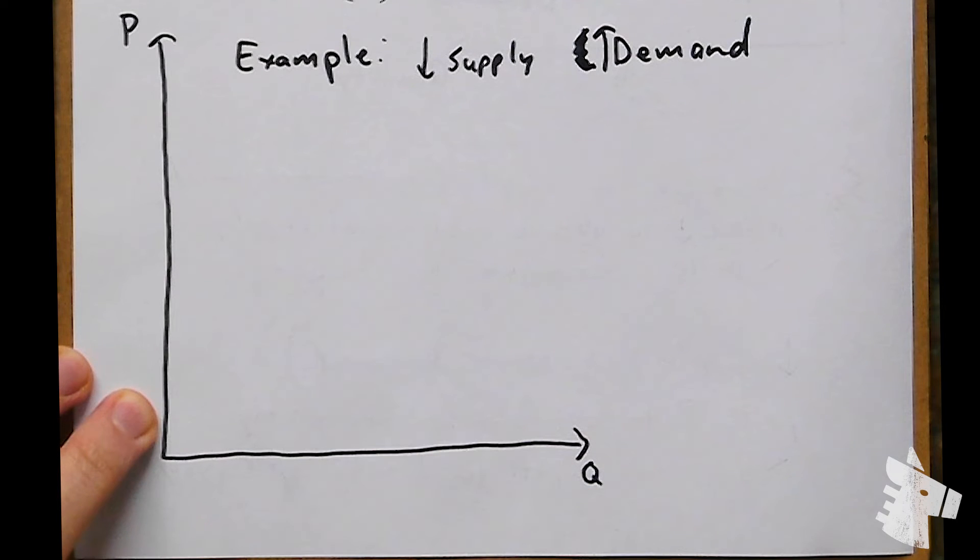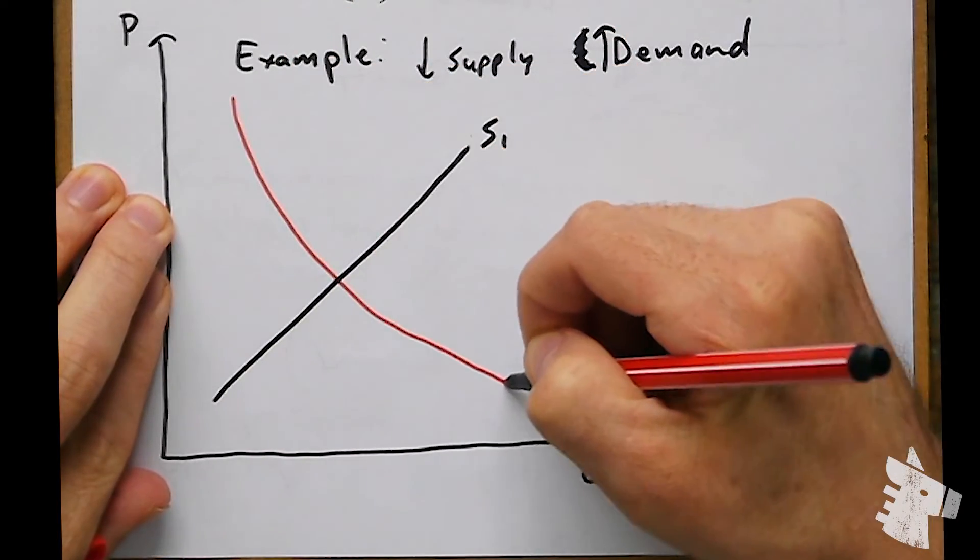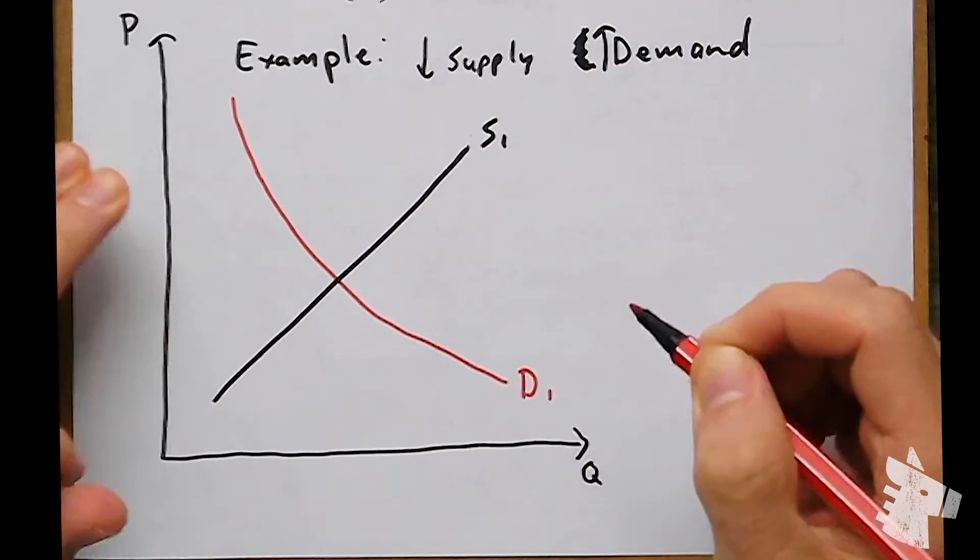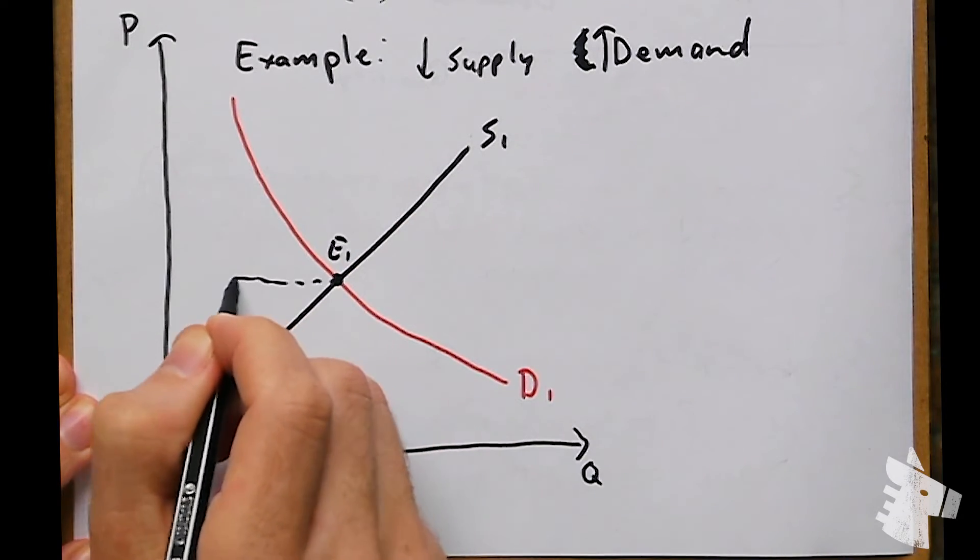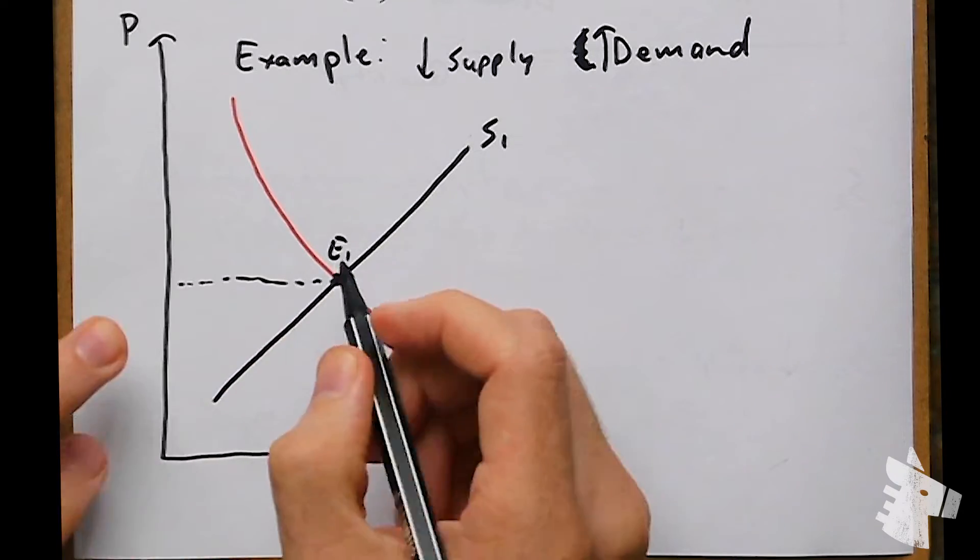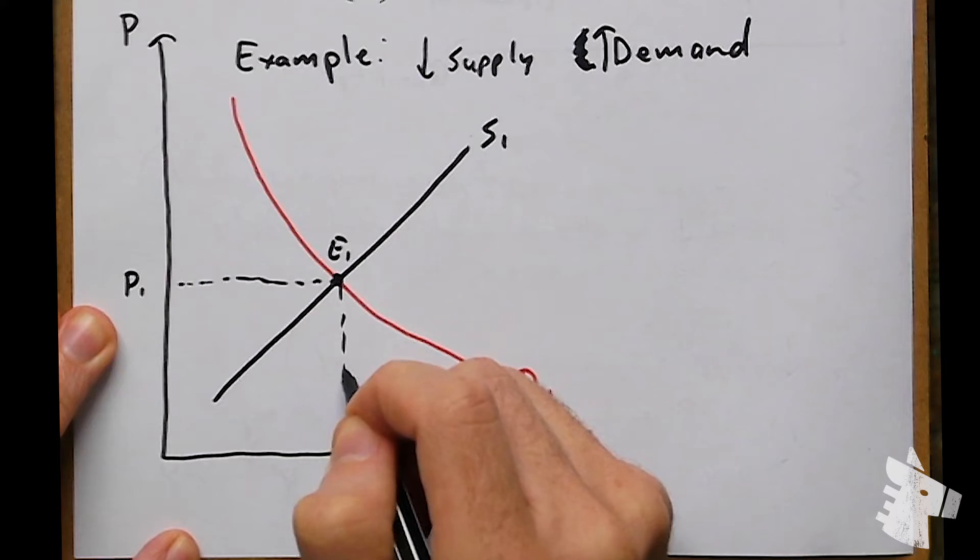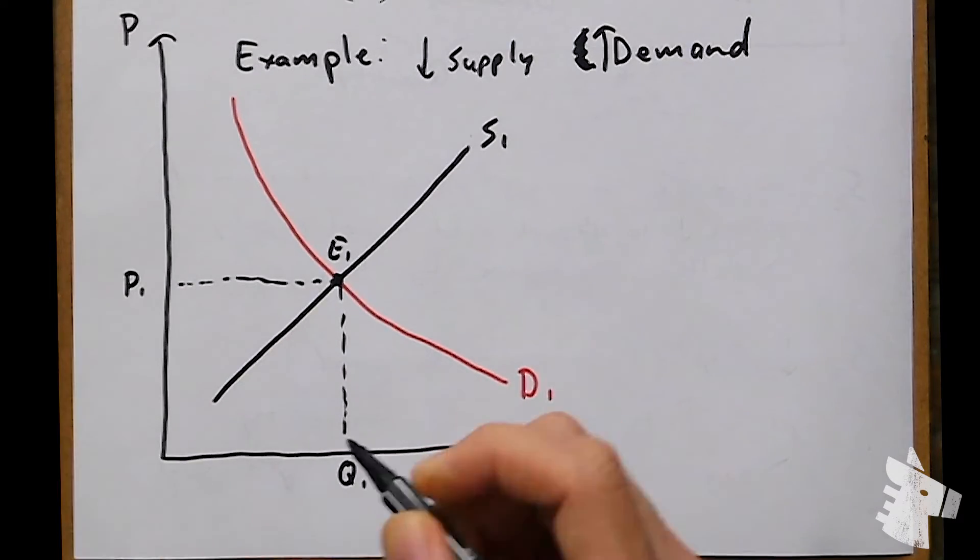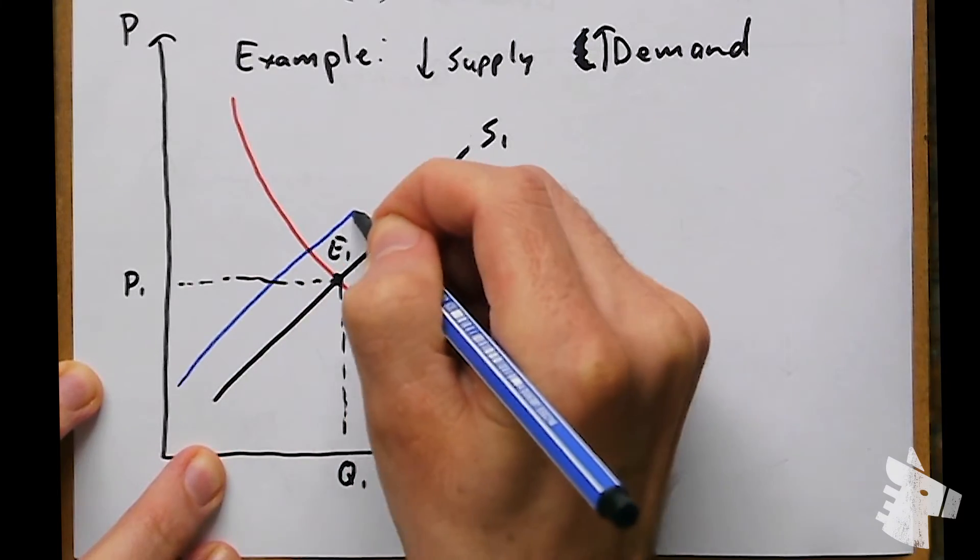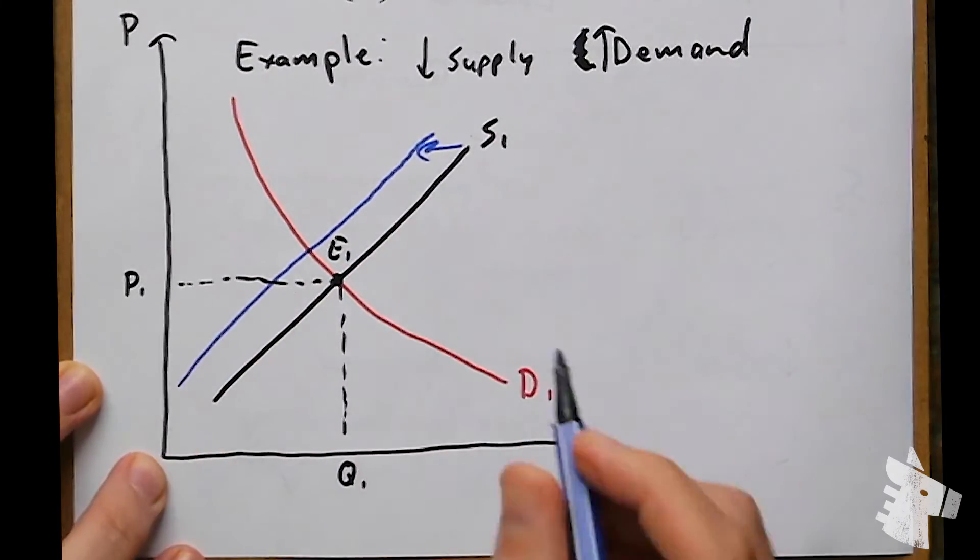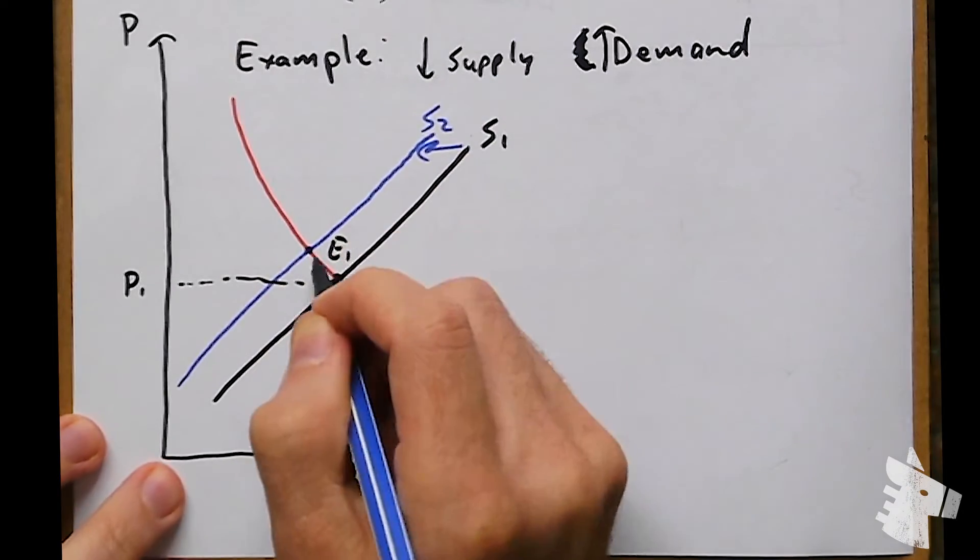Let's do one more, in which we have a falling supply and rising demand. Here's our supply curve, S1, here's our demand curve, D1. They meet at our equilibrium point, E1, which dictates an equilibrium price of P1 and an equilibrium quantity of Q1. Let's say there's a drop in supply, so the supply curve is going to shift inward. This is S2, supply 2, this is our new equilibrium point.